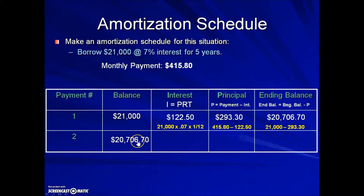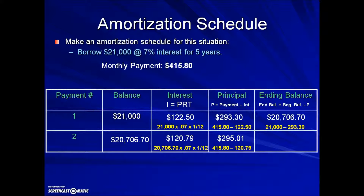The ending balance turns into the beginning balance of line 2 and the process starts over with calculating the interest. Because of that first monthly payment we owe less, and because we owe less, our interest will be less. Using the simple interest formula, we take our balance from line 2 times the interest rate of 7% times the time of one month, giving us an interest payment of $120.79. That interest is subtracted from the monthly payment to calculate our principal, and the principal then reduces the amount of our loan. $20,706.70 less the principal gives us an ending balance of $20,411.69 after two payments on the loan.